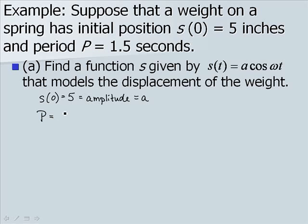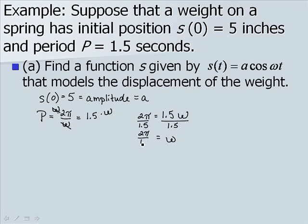P, our period, is defined as 2 pi over omega, and we know that that is equal to 1.5. So we want to take this equation here and solve it for omega. So first thing I'll do is multiply by omega. So I end up with 2 pi equaling 1.5 times omega, and then now I'll divide by 1.5.